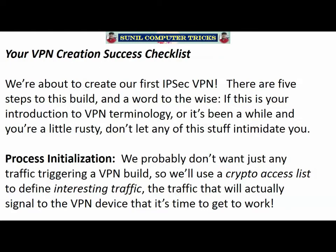We are almost there — just about to create our first IPSec VPN. There are five overall steps to this build. If this is your introduction to VPN terminology or you're a little rusty, don't let it intimidate you. It just takes a little getting used to. We've got two policies to build, a crypto access list to write, and a couple of other things to do. The first step of the VPN build is process initialization. We don't want just any traffic triggering a VPN build, so we're going to write a crypto access list to define what we call interesting traffic — the traffic that will signal to the VPN device that it's time to get to work.